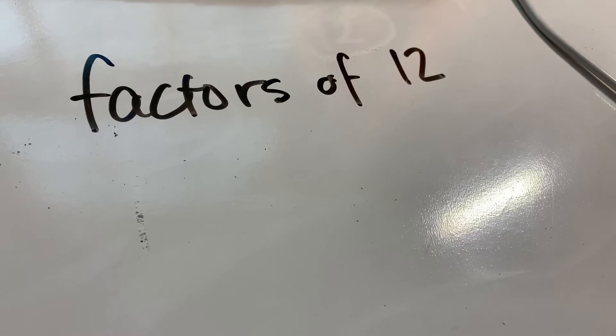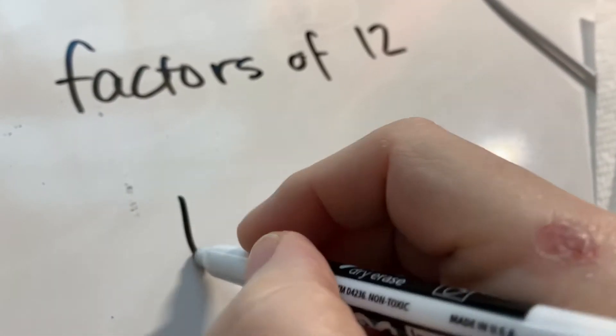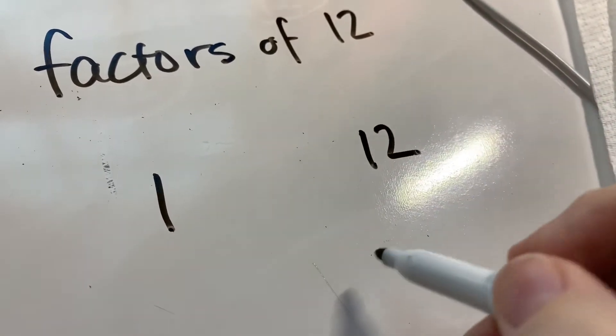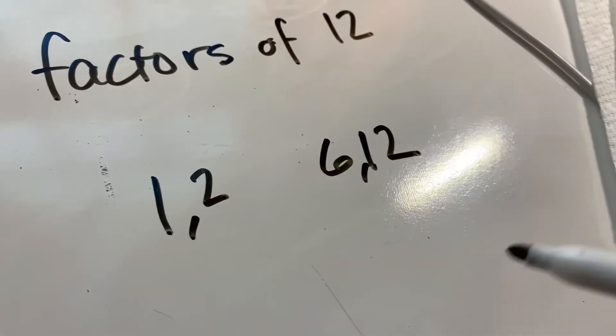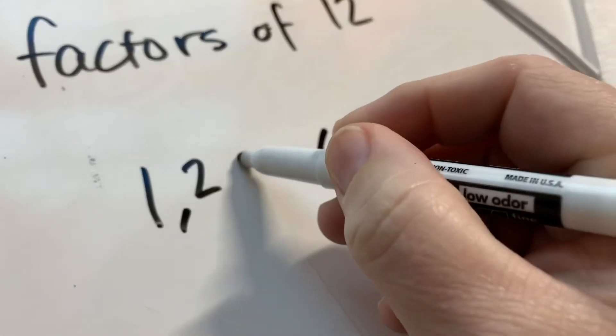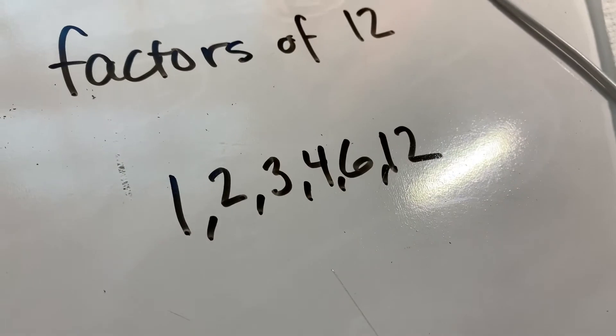Let's look at the factors of 12. So I know the factors of 12 are 1 and 12, that's a factor pair, 2 and 6, that's another factor pair, and 3 and 4, that's another factor pair.